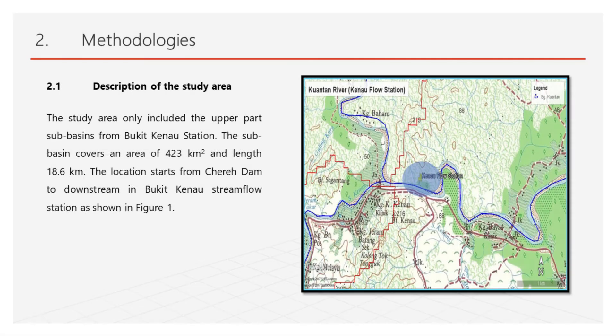After that is the Methodology. Section 2.1 describes the study area. The study area includes only the upper part sub-basin from Bukit Canal Station. The sub-basin covers an area of 423 km² with a length of about 18.6 km. The location starts from Cherah Dam downstream to Bukit Canal streamflow station, as shown in Figure 1.